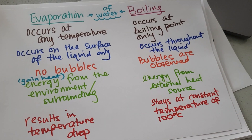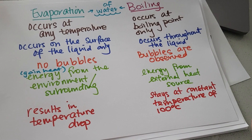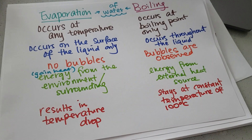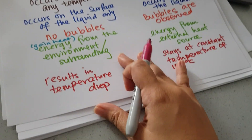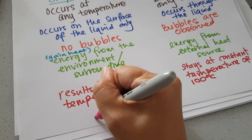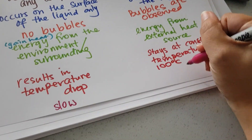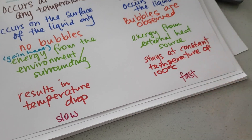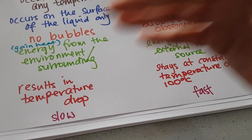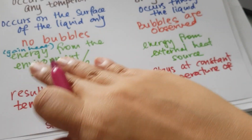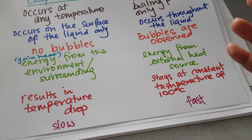One very important point I want to add: evaporation is a slow process, while boiling is a fast process. As I explained earlier with the picture, evaporation has to go layer by layer, which is a much slower process compared to boiling.